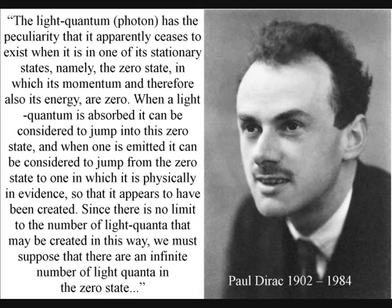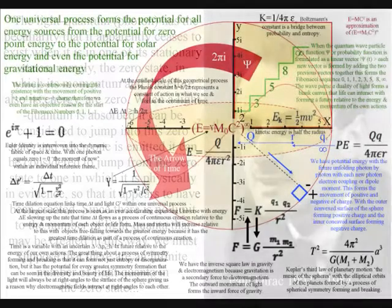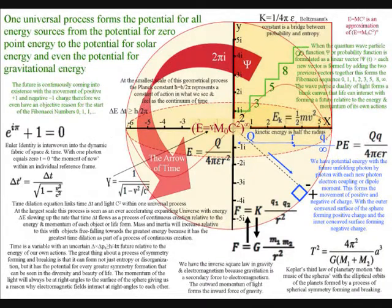that Tesla's potential for unlimited quantities of electric power is based on one universal process that includes all potential energy sources. From potential zero-point energy to the potential for solar energy and even the potential for gravitational energy, are all based on the same universal process.